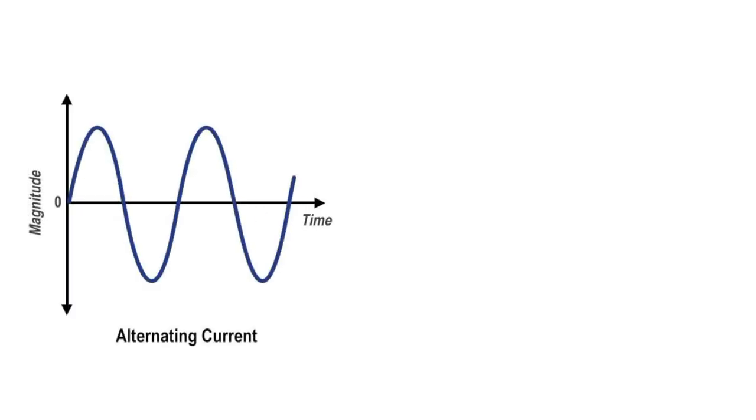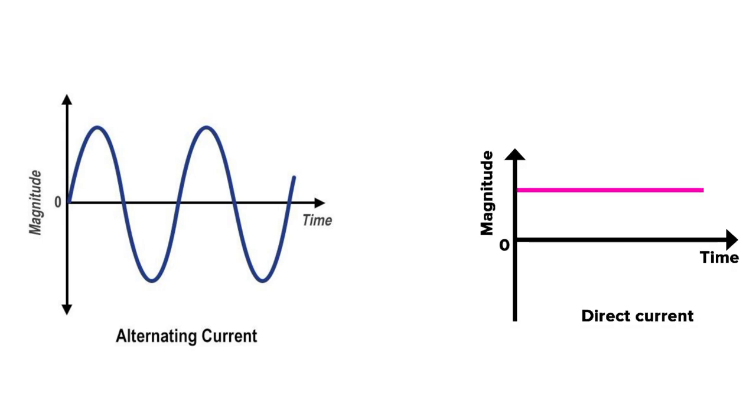One thing you have to remember: frequency is only observed in AC, that means alternating current. In direct current, that means in DC, there will not be any frequency available because in direct current the current direction doesn't change.